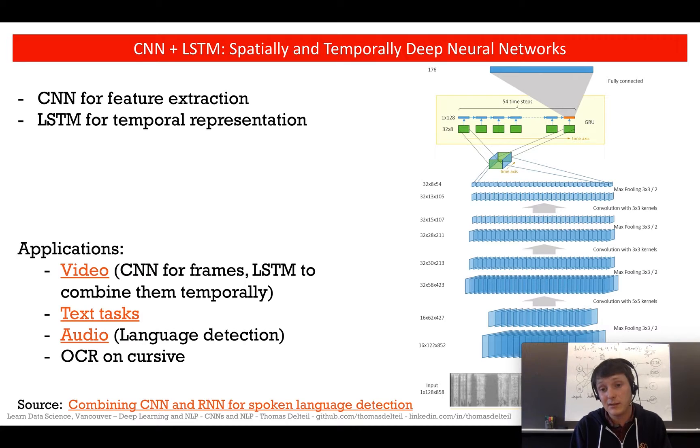For audio tasks, on the right—I can't really see here, but it's taken from a paper on language detection to detect which language someone is speaking. I've actually done, if you check my GitHub, how to do OCR using a convolutional neural network as LSTM with the CTC loss. You can OCR cursive with this method and it works pretty well.